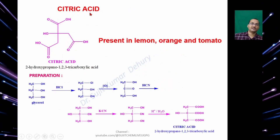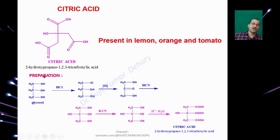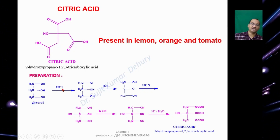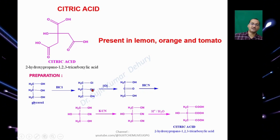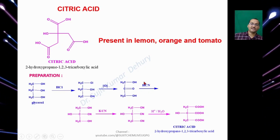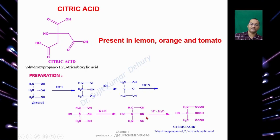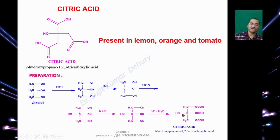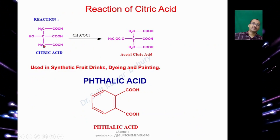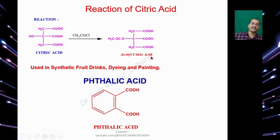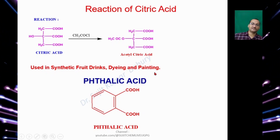Citric Acid is a monohydroxy tricarboxylic acid, present in lemon, orange, and tomato. To prepare: start with Glycerol, react with SOCl₂ to give the monochloro derivative, further oxidation converts the OH to a ketone, reaction with HCN gives cyanohydrin, treatment with KCN gives the tri-cyano derivative, and hydrolysis of cyano groups gives carboxylic acid groups — this is Citric Acid. Citric Acid reacting with Acetyl Chloride gives Acetyl Citric Acid. Citric Acid is used in synthetic fruit drinks, dyeing, and painting.